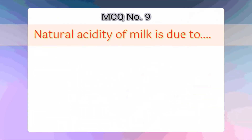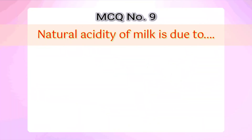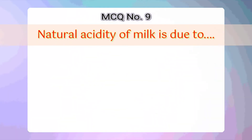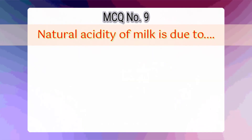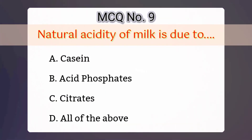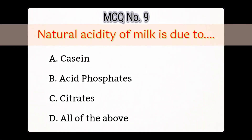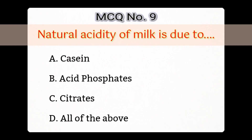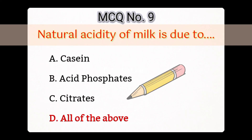9th question: Natural acidity of milk is due to — Option A: Casein, B: Acid phosphates, C: Citrates, D: All of the above. Answer is D: All of the above.